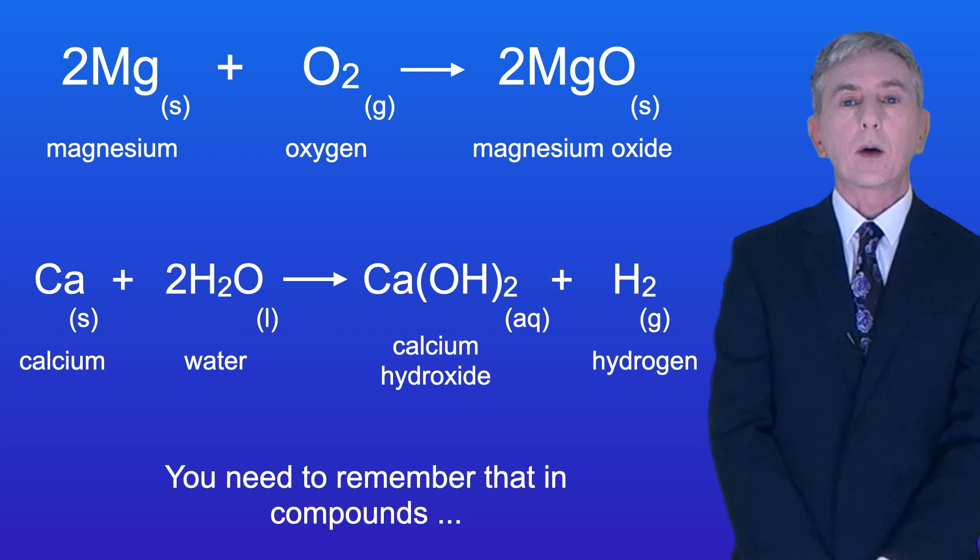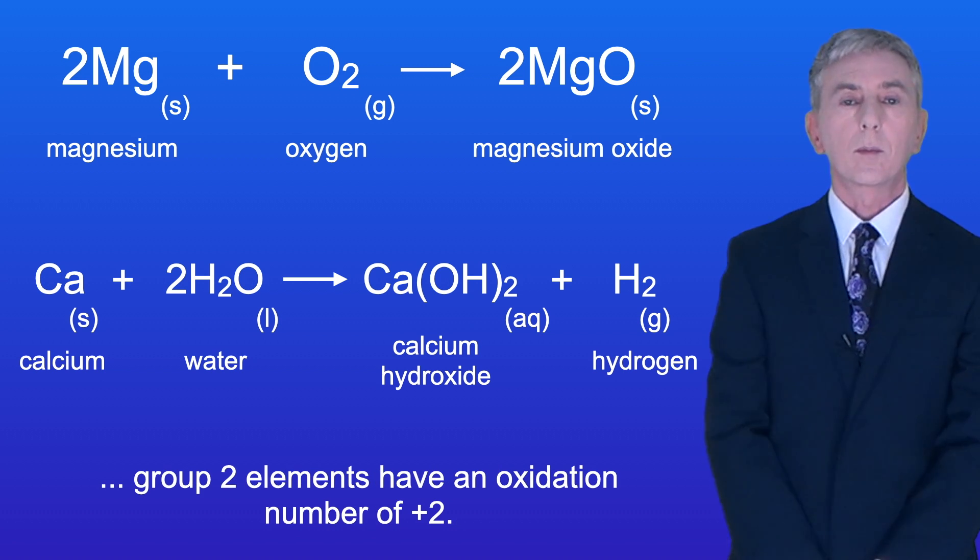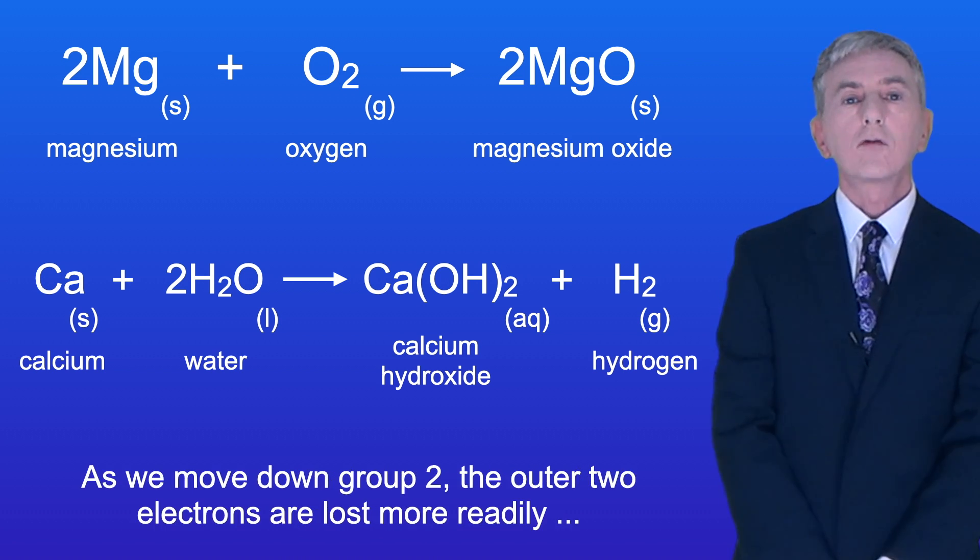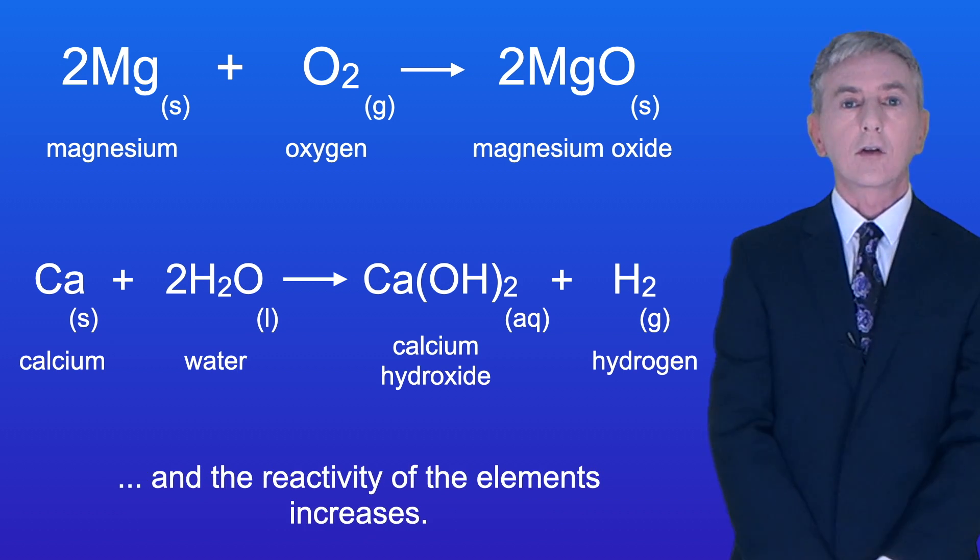You need to remember that in compounds group 2 elements have an oxidation number of +2. As we move down group 2 the outer two electrons are lost more readily and the reactivity of the elements increases.